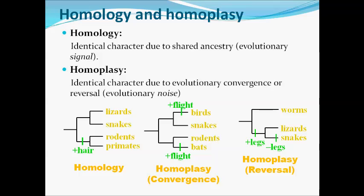In contrast, homoplasy refers to identical characters due to evolutionary convergence or reversal. Homoplasy is of two types: convergence and reversal. In the case of convergence, birds and bats have both converged on the common function of flight, whereas snakes and rodents have not. Since this character of flight was not present in the ancestors of birds and bats, and they developed it independently along different evolutionary paths, this is called convergence homoplasy.